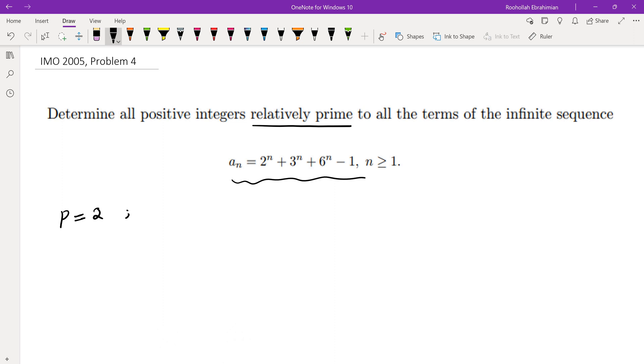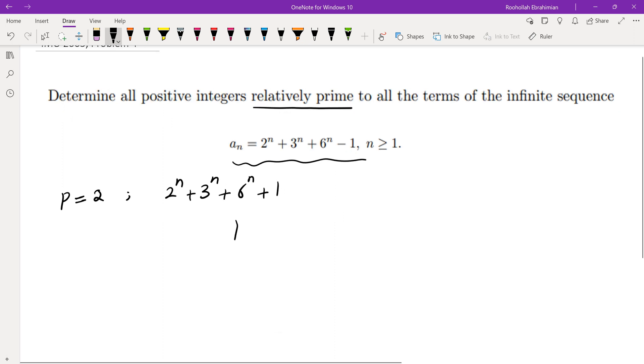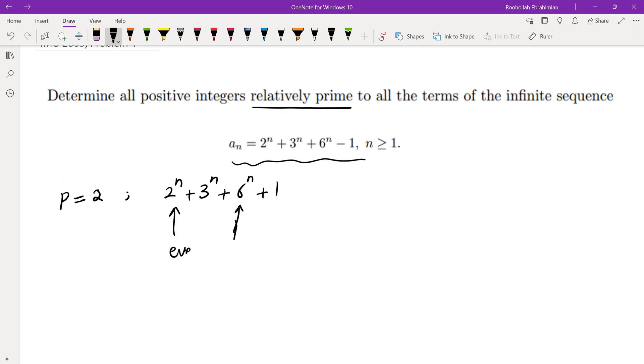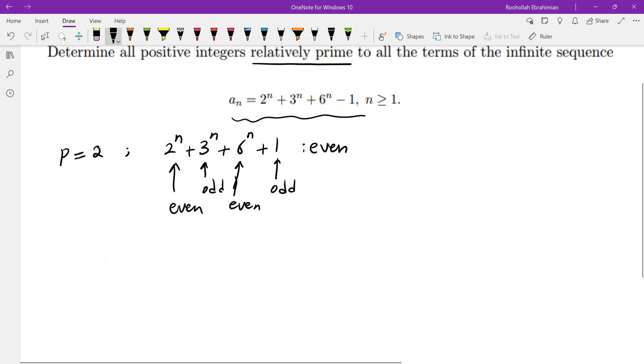So if I plug in p equals 2, looking at 2^n, 3^n plus 6^n plus 1, these two terms are even and these two terms are odd, which means this is in fact always even. So 2 is never relatively prime to a_n. So 2 is not one of those primes.